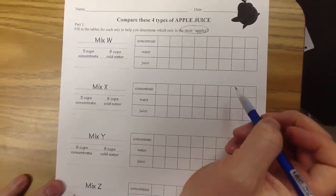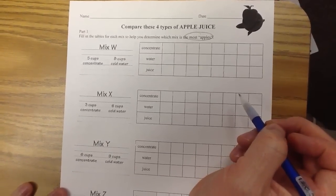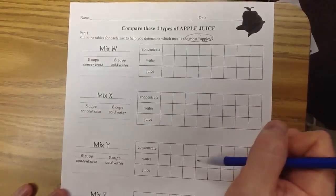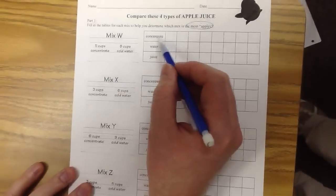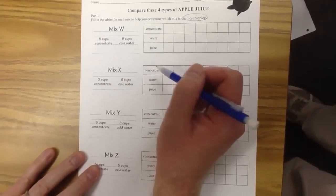Remember our work today in class, to find out which mix was the most orangey, we completed these ratio tables and compared the number of cups of concentrate or the number of cups of water.